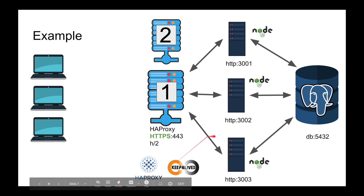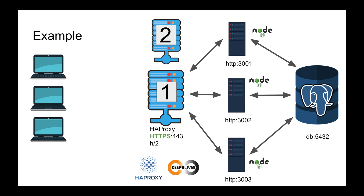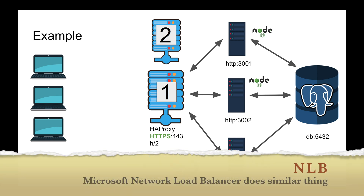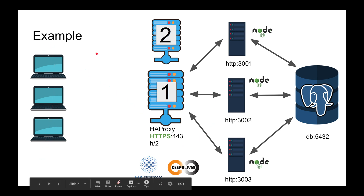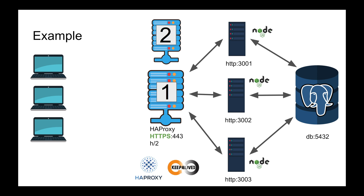You also have another software installed called Keepalived — that's one of the software packages that enables high availability and supports VRRP. You give it a group of machines and the same VIP, and it does its job: it gives you one master virtual IP address. You share this VIP publicly, put it as a DNS A record, and people connect to it. DNS resolves to the VIP, Keepalived decides who is master via ARP, and the load balancer takes over from there.